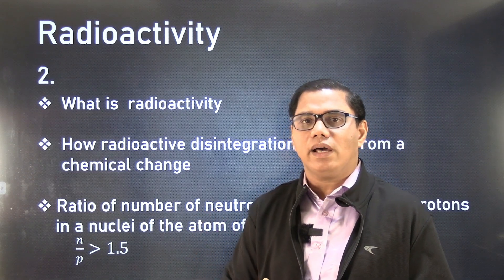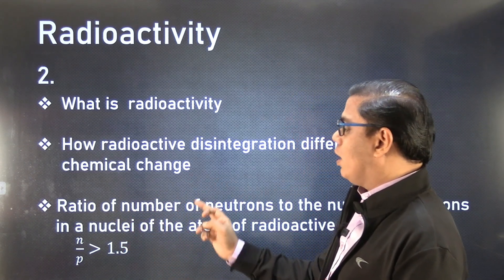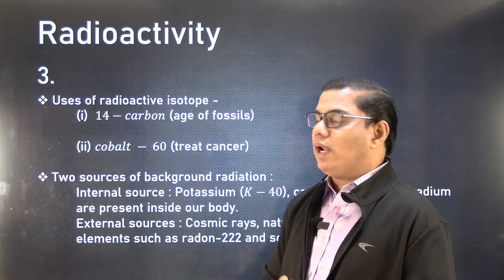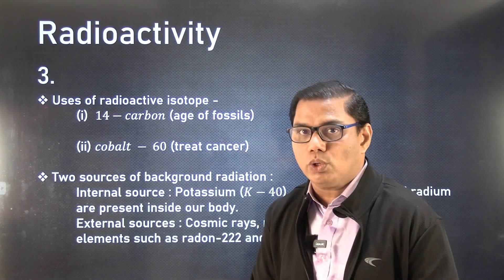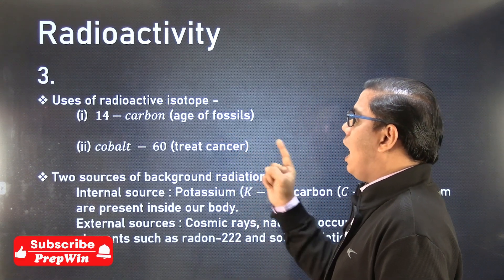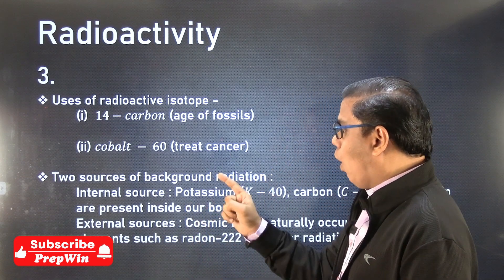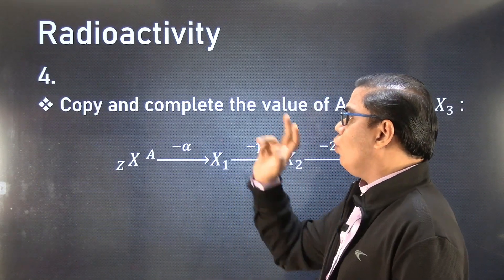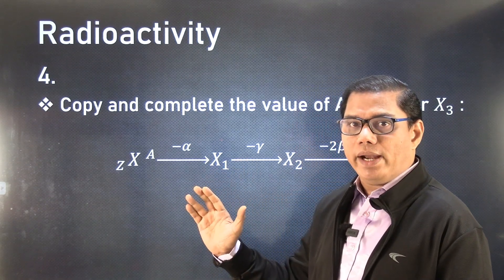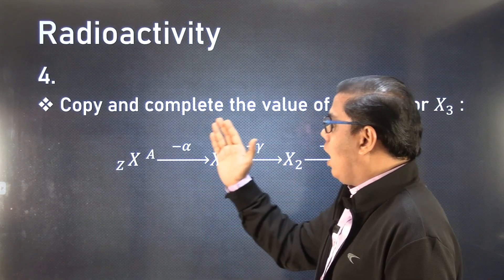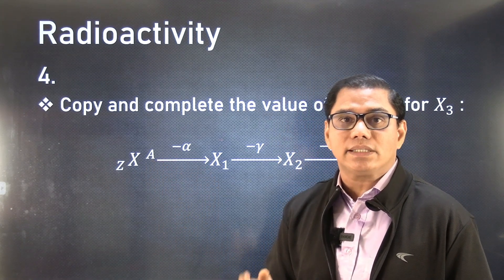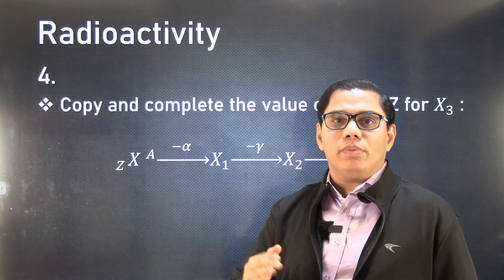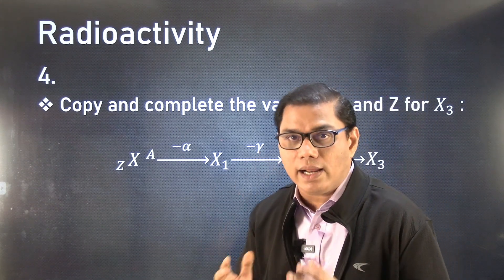The third prediction is about the ratio of the number of neutrons to the number of protons. Prediction number three also covers uses of radioactive isotopes — specifically the use of carbon-14 and cobalt-60 — and two sources of background radiation. You must know them properly. Prediction number four is a numerical in which a mother element emits alpha, beta, or gamma particles and you need to find out the atomic number and mass number of the respective daughter elements.